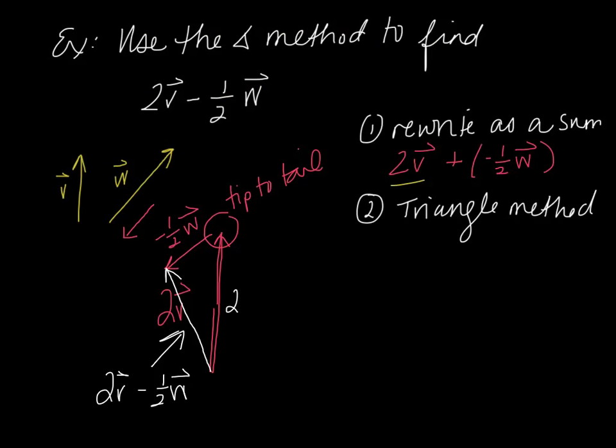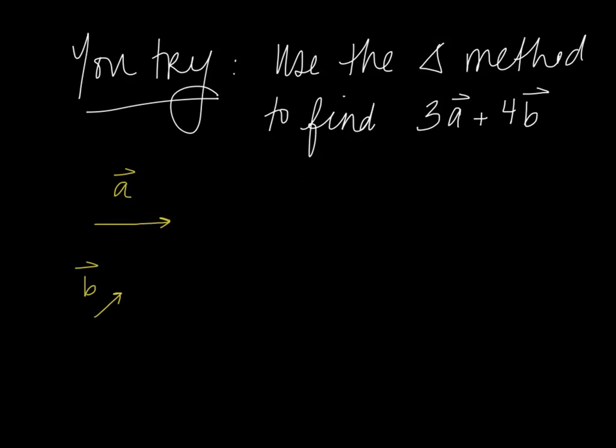So again, this is 2 times vector v. This is negative 1 half vector w. I took half of its magnitude and changed the direction and used the triangle method to find the resultant. Okay, so now I would like you to try. Use the triangle method to find 3 times vector a plus 4 times vector v. Here's your vectors. Copy them to the best of your ability on your piece of paper and try 3 vector a plus 4 vector b.